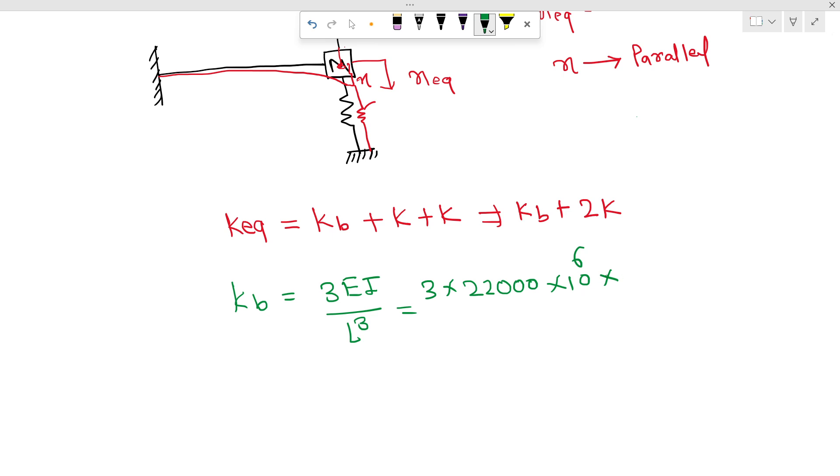divided by length of the cantilever beam is given as 3.6 and we will do the cube because it is L cubed. So if you solve this